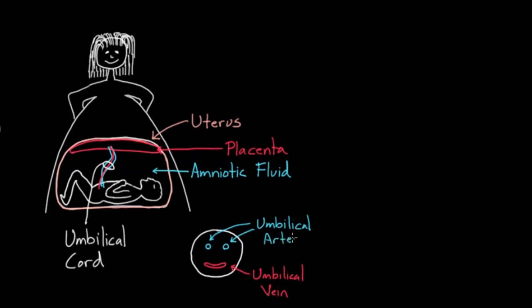So the umbilical arteries and the umbilical vein look like this. And actually they're not just freely floating out there. They're actually encased in this jelly. And the jelly is called Wharton's jelly. I'm actually just going to redraw this just to show you how I remember.